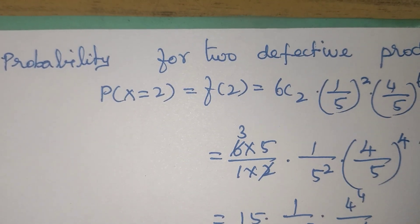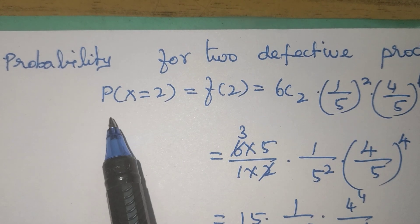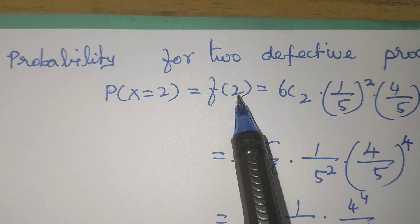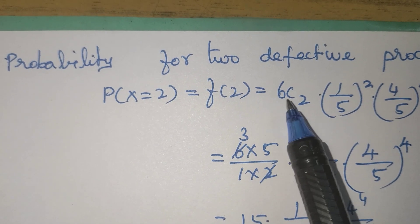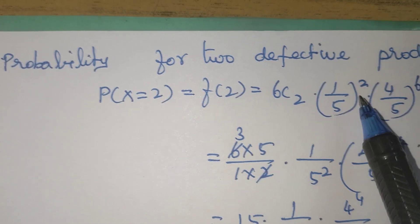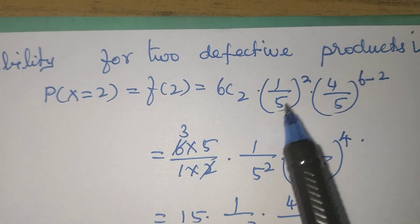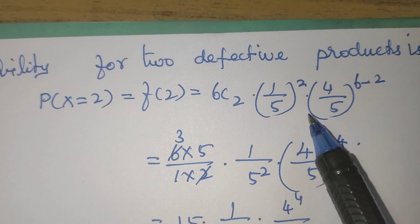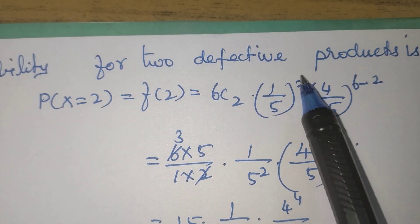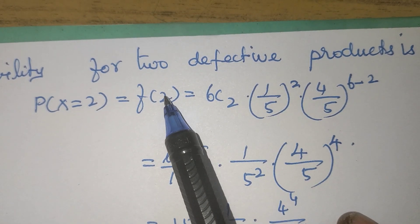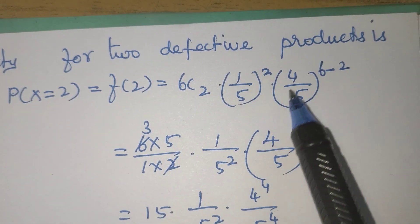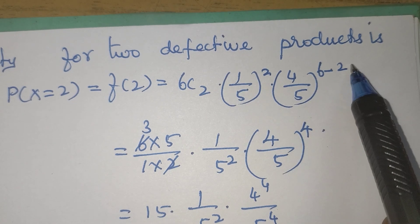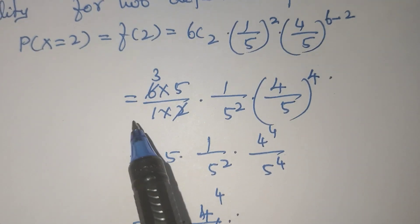Probability for two defective products is P(X = 2). F(2) is equal to 6C2 times (1/5)^2 times (4/5)^(6-2), that is (4/5)^4.